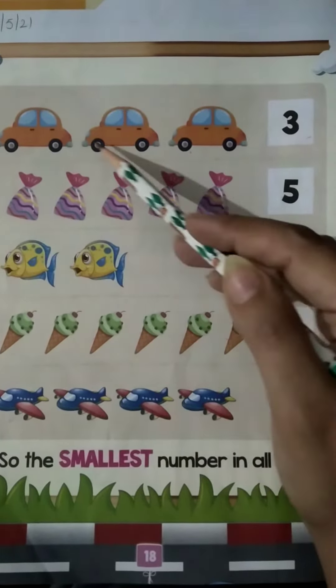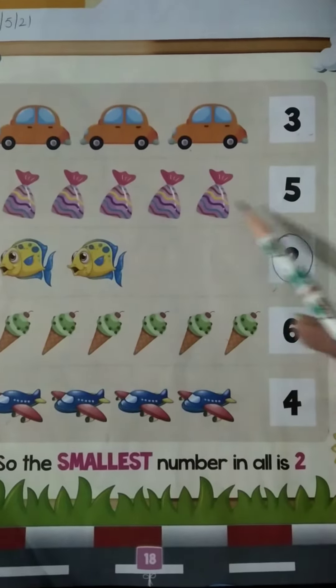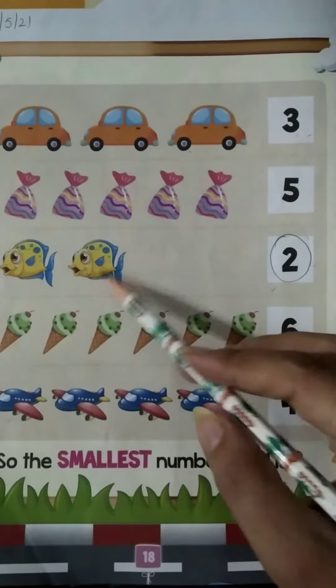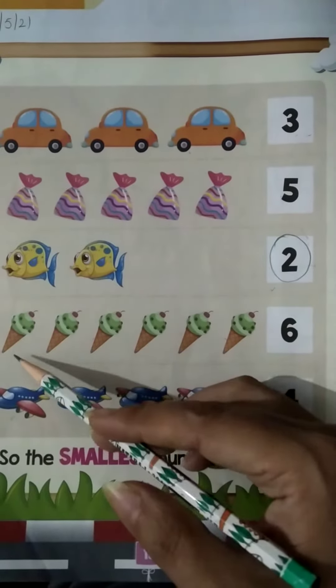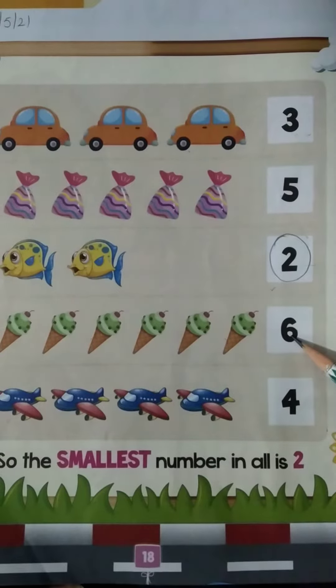So let's count: 1, 2, 3. 3 cards. 1, 2, 3, 4, 5. 5 cars. 1, 2. 2 fishes. 1, 2, 3, 4, 5, 6. 6 ice creams.